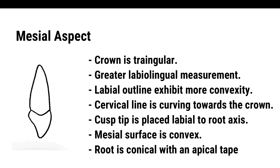Mesial Aspect – Crown: The crown is wedge-shaped with the base at the cervical one-third and apex at the cusp tip. The entire crown appears bulkier because of prominent labial and lingual ridges. The labial outline is convex with the crest of convexity at the cervical one-third. The lingual outline is convex in the cervical one-third at the cingulum. The outline straightens and becomes concave at the middle one-third, then again convex in the region of the incisal ridge.